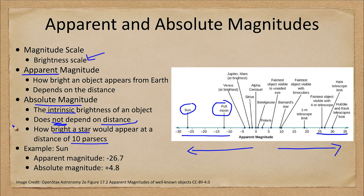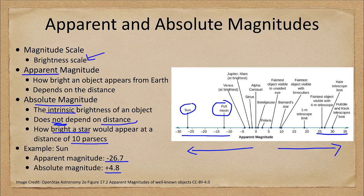For example, our Sun has an apparent magnitude of −26.7 — it's extremely bright. But if you moved it 10 parsecs, or 32.5 light years away, it would have an absolute magnitude of +4.8. That is how bright it would appear in the sky at that distance, making it one of the fainter stars visible with the naked eye — visible but not one of the brightest.